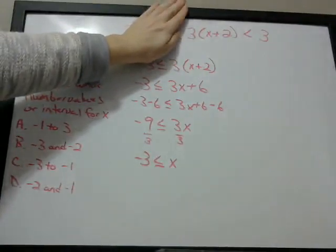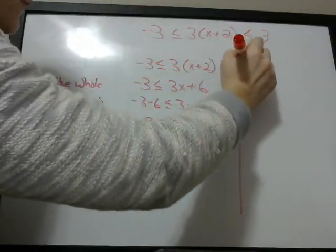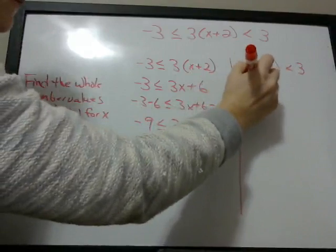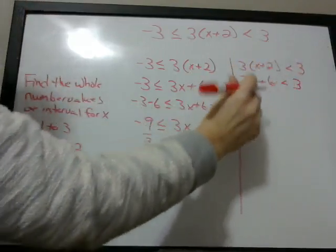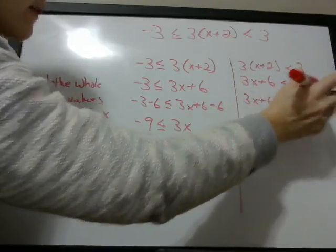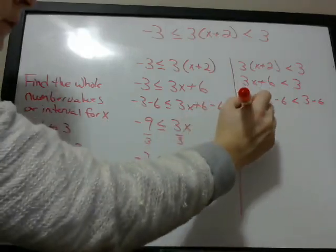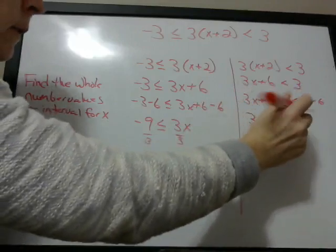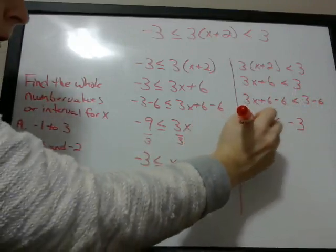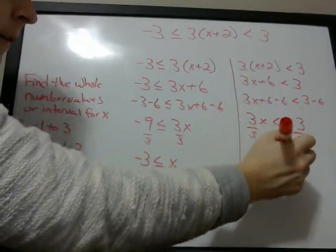That will satisfy that side of the equation, but that's only half of it, because we also have to satisfy the other inequality. So now we're just going to look at this side: 3 times (x + 2) is less than 3. Again we use the distributive property: 3x + 6 is less than 3. We need to get rid of the 6, so 3x + 6 minus 6 is less than 3 minus 6, giving us 3x is less than negative 3. Now we divide by 3 — dividing by a positive number, so no sign change — and we get x is less than negative 1.